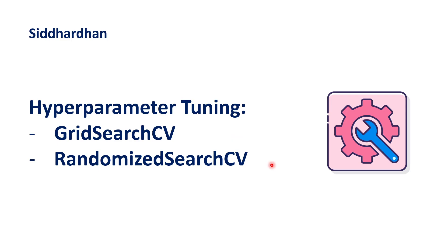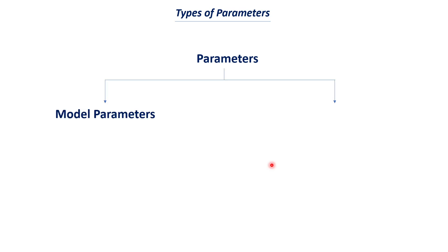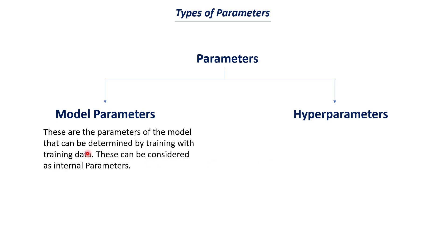So let's get started. We have discussed before in my channel about the different types of parameters in machine learning, and I would like to recap this topic. In machine learning we often deal with two types of parameters: one type is called model parameters and the other type is hyper-parameters. Let us understand each of these types with their definitions. Model parameters are those parameters of the model that can be determined by training with the training data, and these can be considered as internal parameters.